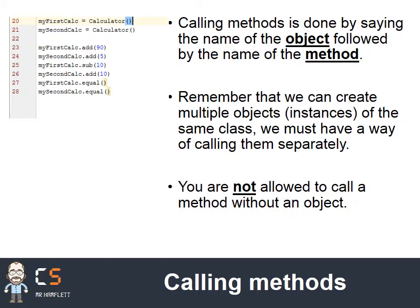Let's be really clear about how methods are called. We need an object in order to call a method. So I've instantiated two objects - my first and my second. I then put the name of the reference variable, followed by a full stop and the name of the method. Because we can create multiple instances of a single class, we need a way of telling them apart. We're not allowed to call a method without an object, because methods are going to manipulate attributes within the class, and since we might have more than one, we need to be clear about which one we're talking about.